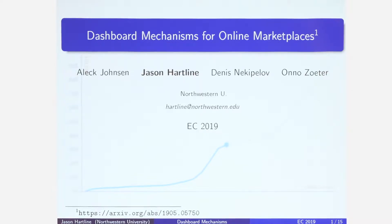Informally, a dashboard mechanism — for a dashboard that you have in mind and some allocation algorithm your engineers have given you — works like this: we publish the dashboard for each player, solicit bids, assume these bids are best responses to the dashboard (which means we can back out what values or preferences the agents might have that drove these bids), then execute the algorithm on the backed-out values. We charge the winners their bids in the winner-pays-bid format; in the all-pay format, we charge everybody their bids. For this talk, I'll focus on winner-pays-bid only.